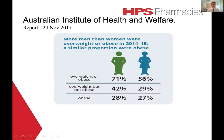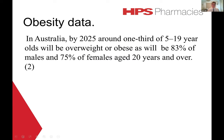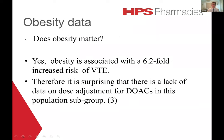In 2015, 28 percent of males and 27 percent of females were deemed to be obese. In Australia by 2025, approximately 83 percent of males and 75 percent of females aged 20 or over will be obese or overweight. Does obesity matter? Yes — obesity is associated with a 6.2-fold increased risk of venous thromboembolism, with the highest risk among those aged greater than 50 years and those in classes two or three of obesity.